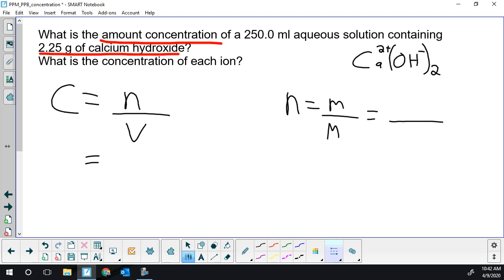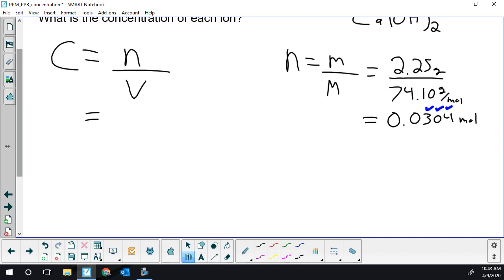So to get the molar mass of calcium hydroxide, I have one calcium, two oxygen, and two H. In total, we have a mass of 74.10 grams of calcium hydroxide per mole. And this solution has 2.25 grams of solute. That is going to give us 0.0304 moles. Again, I've rounded it to the correct number of significant figures, but you'd want to keep all the figures in your calculator. The three significant figures are the ones with the blue chalk mark above them.